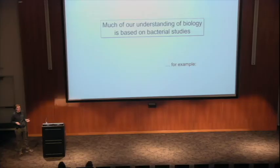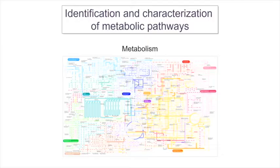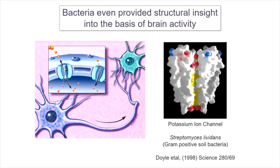Bacteria have been studied for a while. It's an old model system. We've learned a lot from studying bacteria, mapping out metabolic pathways, gene regulatory networks. Interestingly, we've even learned about how our own neurons work by studying bacteria. The first ion channel structures came from soil bacteria, and those structures went on to win Nobel prizes and explain how action potentials work. And it still remains that they are in these soil bacteria and it's not clear what they do with them.